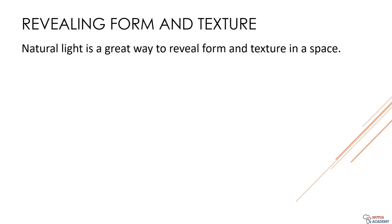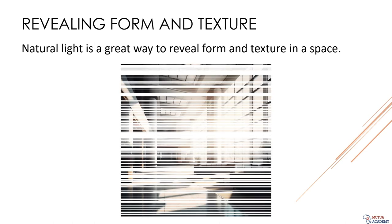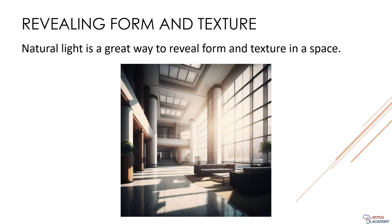Natural light is like a little slice of heaven in your building. By positioning your windows just right, you can create cool patterns of light and shadow on your walls and surfaces — like having your own personal light show courtesy of the sun. Natural lighting can also make your space feel more open and airy, which is perfect for tiny spaces. It's like a magic trick: one minute your room feels cramped, and the next it's like you're living in a palace.